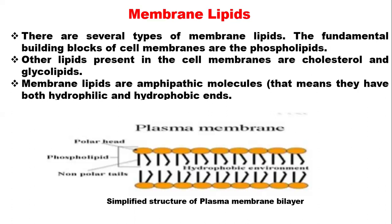The hydrophobic portion hates water and will be embedded deep inside the membrane so it is not interacting with water. This picture shows the simplified structure of the plasma membrane bilayer. The membrane has two layers — that is why it is called a bilayer. The outer membrane has the polar head, which is the hydrophilic portion facing outward, while the hydrophobic portion consists of the hydrocarbon chains of fatty acids facing inside the cell.